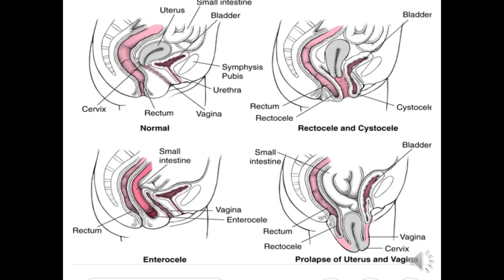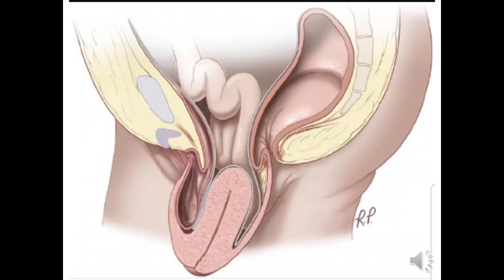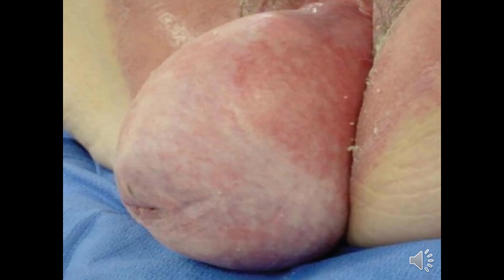Visual examples shown: cystocele, rectocele, uterocele, and procedentia. In procedentia, all of the uterine body is outside — the vagina is visible and may appear ulcerated.